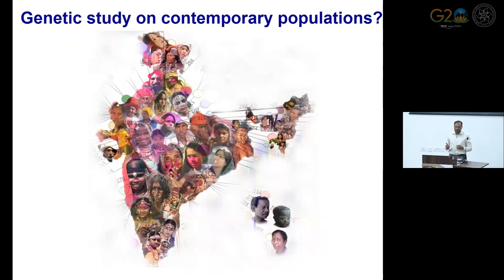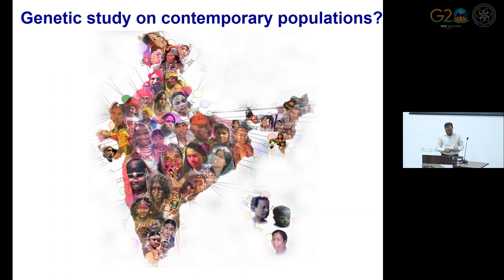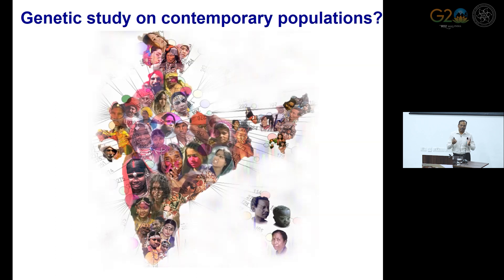These ancient DNA studies are still not telling us when modern humans arrived in the Indian subcontinent. In the absence of archaeological tools, which are very important to understand what the genome looked like at that time, the availability of endogamous populations in India provides a large number of genetic opportunities for us to analyze genomes and draw conclusions.